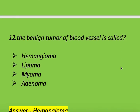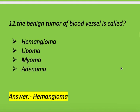Next question: the benign tumor of blood vessels is called what? Options: hemangioma, lipoma, myoma, and adenoma. Right answer is hemangioma. The benign tumor of blood vessels is called hemangioma.